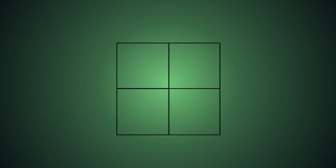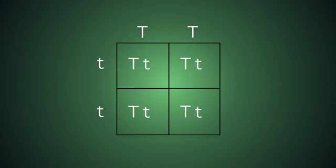We're going to put one parent's alleles on the top of our Punnett square, and the other parent's alleles on the side. So at the top we'll put big T, big T, and on the side we're going to have little t, little t for the short plant. Then we'll fill in each box of the Punnett square with the alleles from the corresponding rows and columns — pull the big Ts down and the little ts over. This gives us all of the possible genotypes that the offspring of these two plants could have. As we can see, the resulting offspring will all be heterozygous, big T little t.